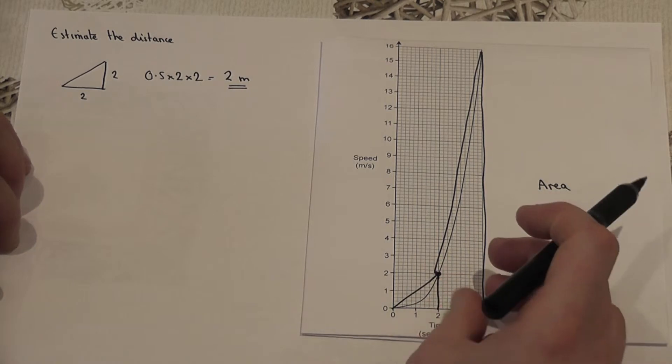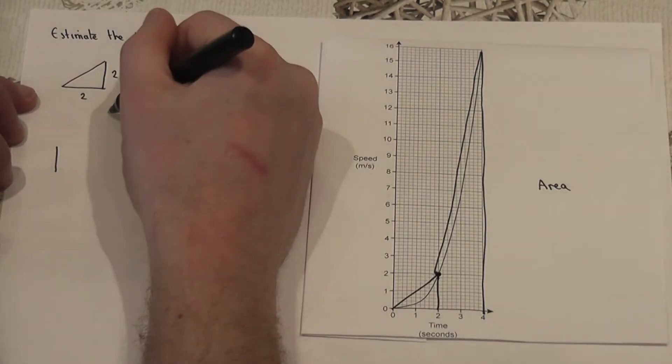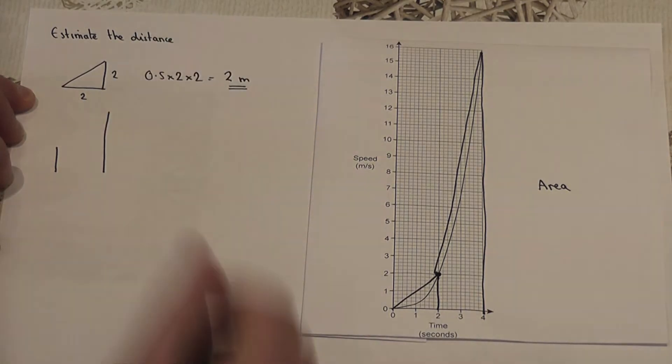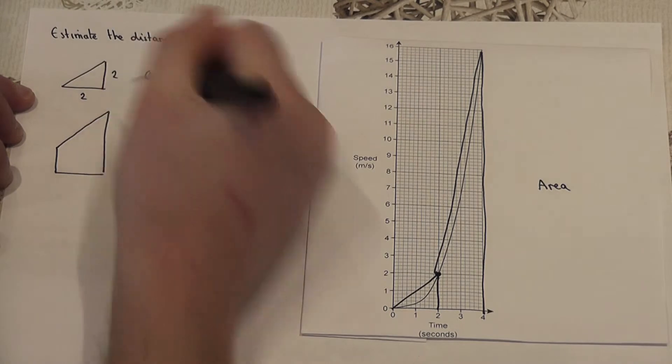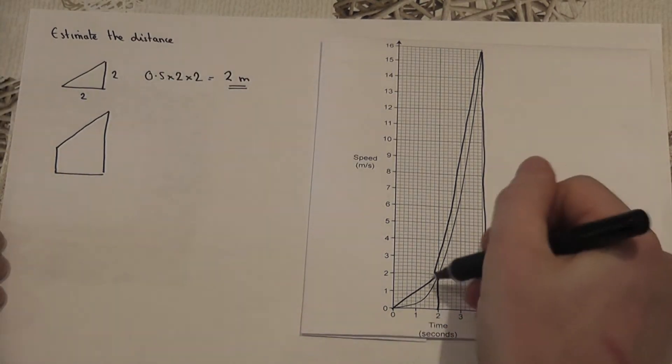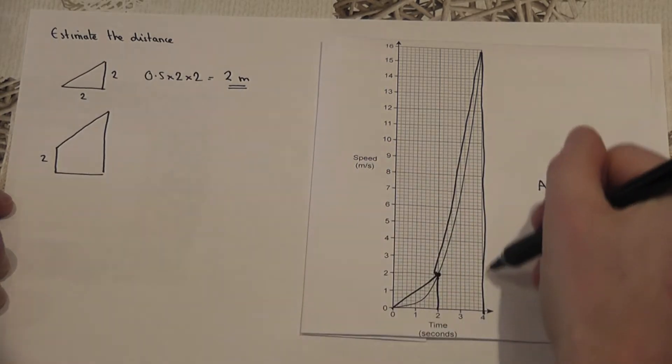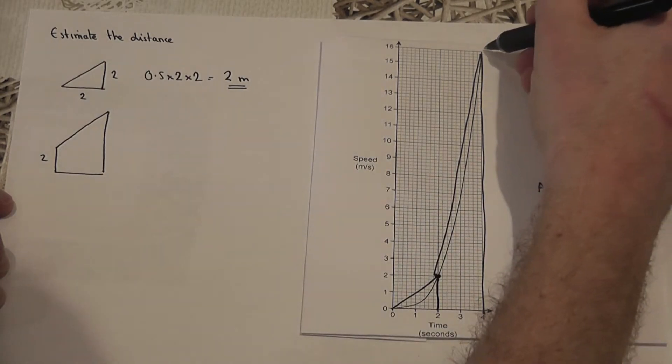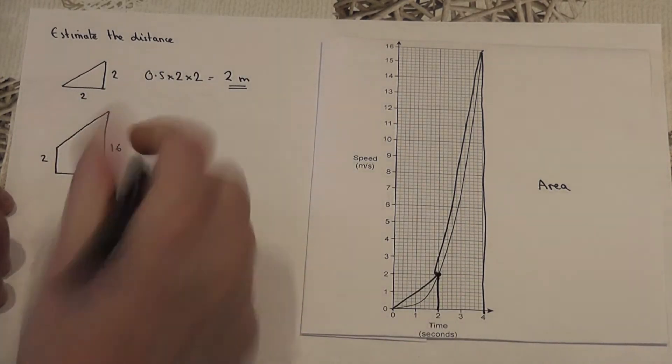Now the second shape is a trapezium. It's got one length here, one height here, a much taller parallel side. Now the first height goes up to 2. The second height goes all the way up to 16, and it's got a width of 2.